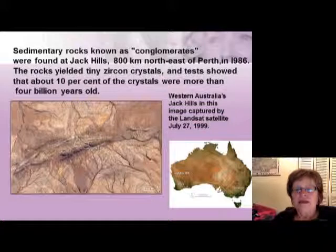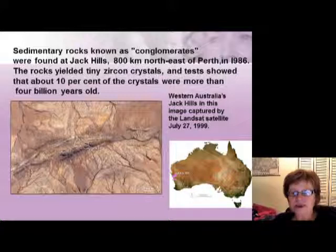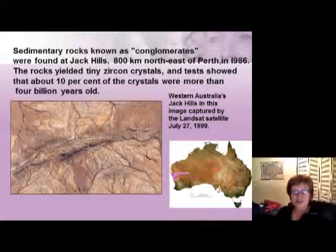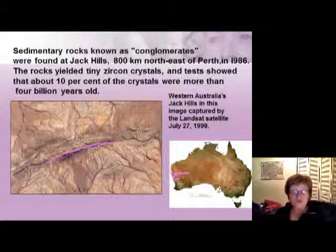The oldest known rocks come from Australia, found at Jack Hills, about 800 kilometers north of Perth. In these conglomerate rocks, geologists found tiny zircon crystals. Testing showed that about 10 percent of these zircon crystals were more than four billion years old — making them the oldest measured rock pieces on Earth.